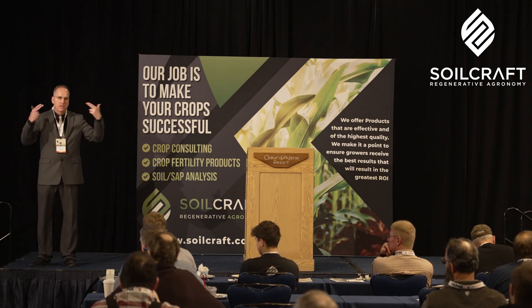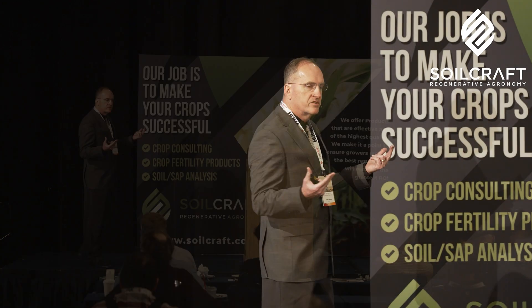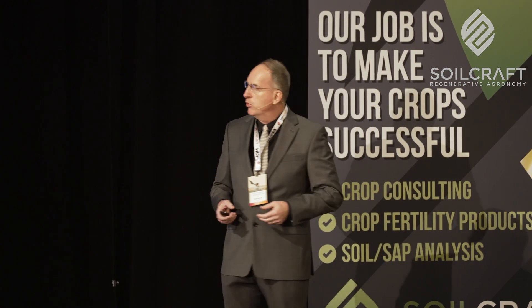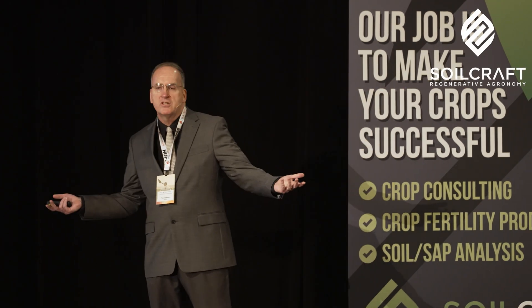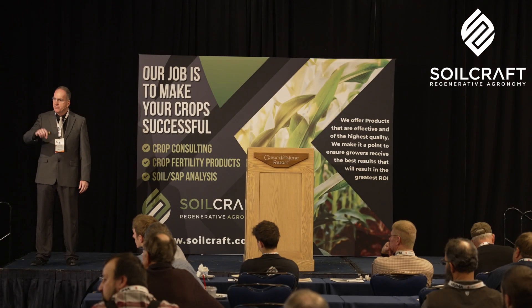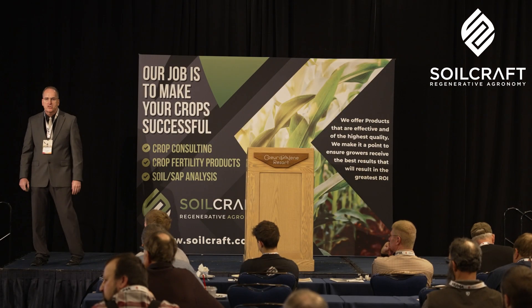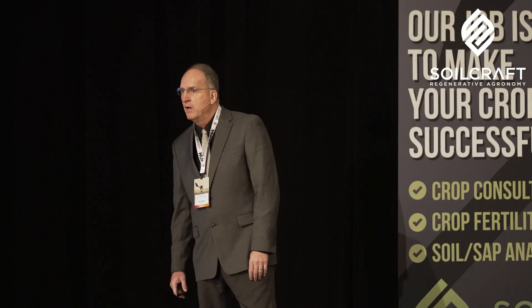The chemoreceptors are what the insect smells and what it tastes. A generalist is going to have more of them, and the pea aphid does have more. The pea aphid has 184 chemoreceptors. The soybean aphid has only 126. So there are an additional 60-plus chemoreceptors that enable the pea aphid to zero in on different plants of different species because it has a broader range. The soybean aphid is more specific — it knows what it wants and it will find it.